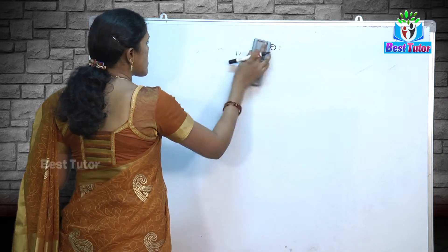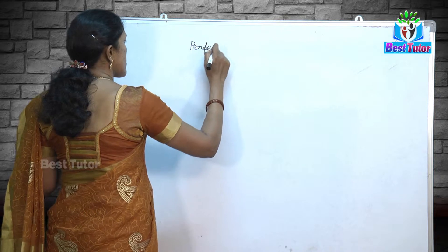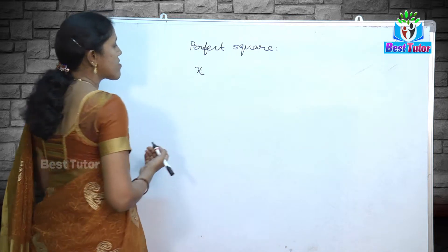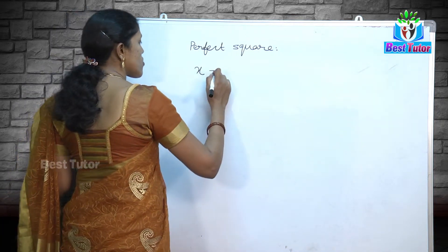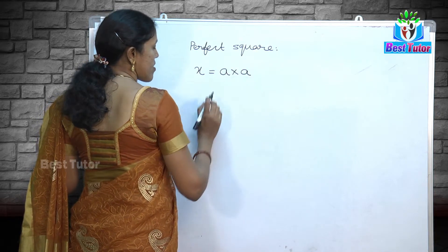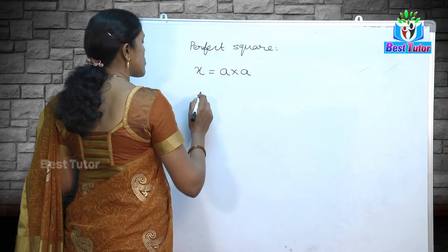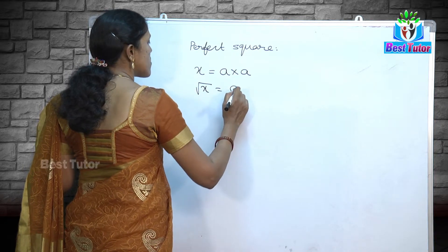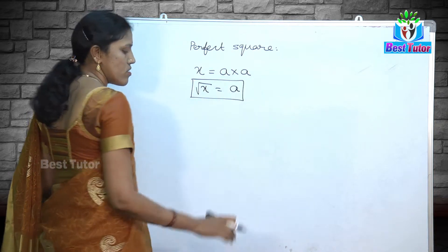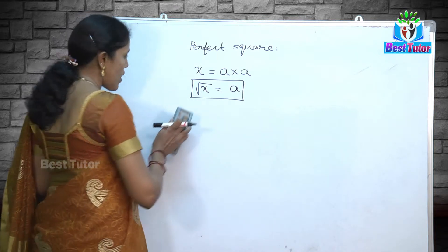Now, what is a perfect square? 'x' is said to be a perfect square if it can be written as the product of a number multiplied by itself. 'x' is a perfect square if there exists some natural number 'a' such that a into a is equal to x. Then the square root of x is written as 'a'. So square root of x equals a if x equals a into a. This is the definition of perfect square and square root.